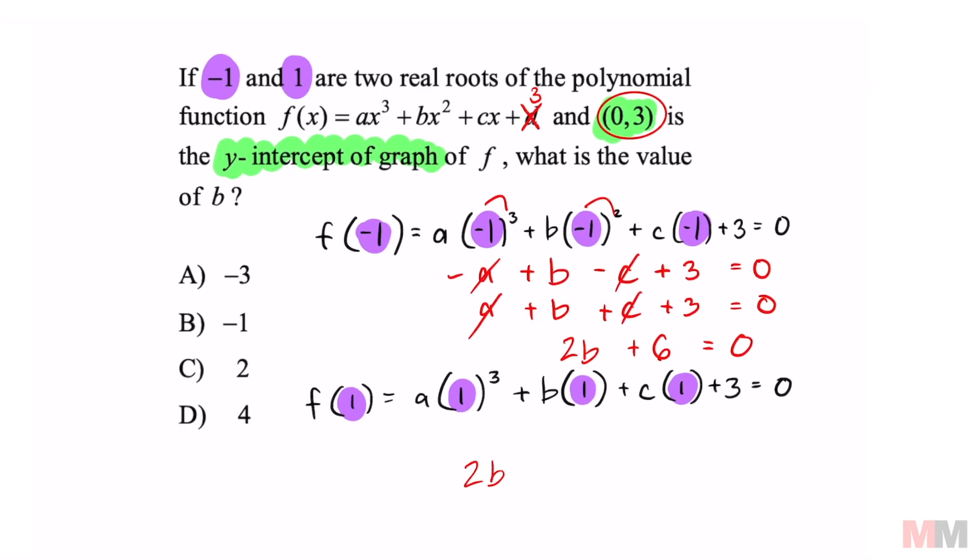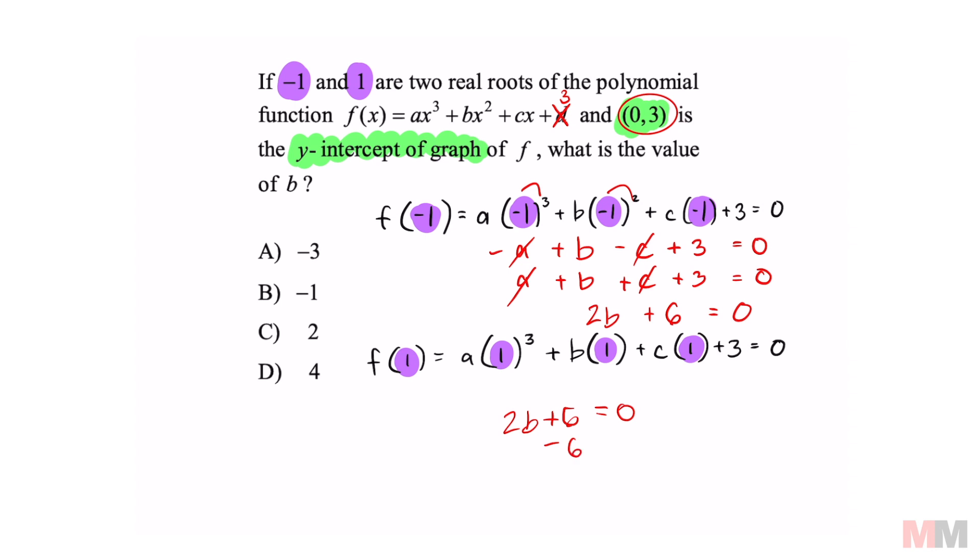Ran out of space. Let me write it at the bottom. Solve for b, and we get 2b equals negative 6. Divide that by 2, and we get b equals negative 3.